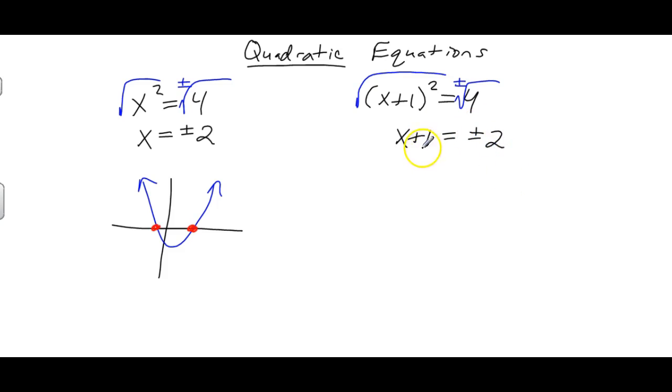Now you're not quite done solving, but it's not hard from here. Just subtract 1 from both sides, so you get x equals negative 1 plus or minus 2, which is really two different answers. That's negative 1 plus 2 which is 1, so x equals 1, or negative 1 minus 2 which is x equals negative 3.